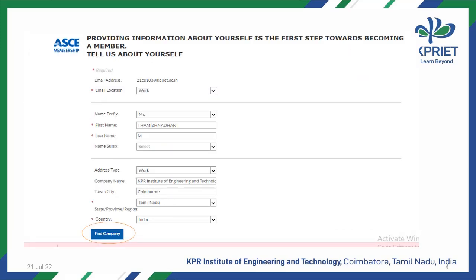you have to enter your details: email location as Work, your name, address type as Work, company name as KPR Institute of Engineering and Technology, town as Coimbatore, state as Tamil Nadu, and country as India.